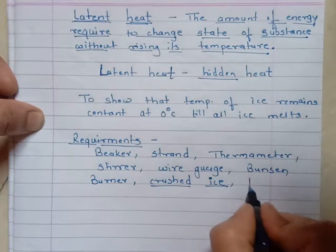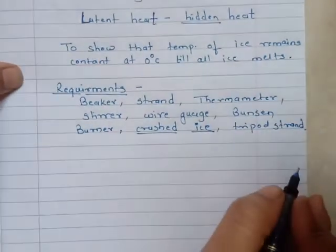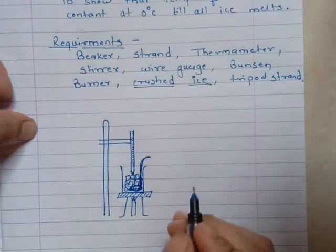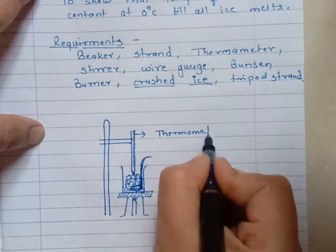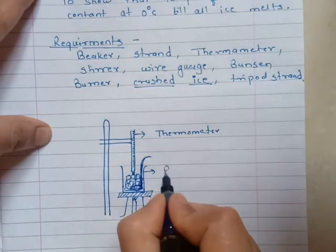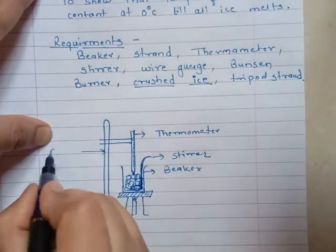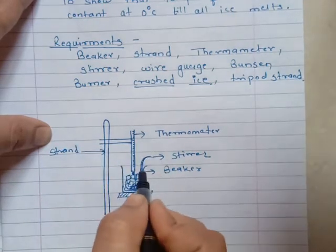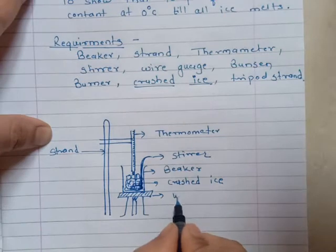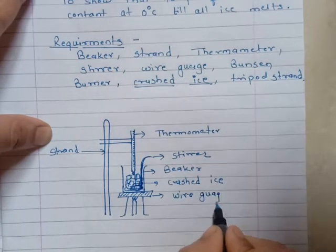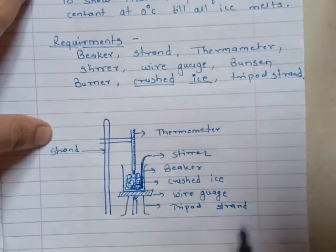Apart from crushed ice, you require a tripod stand. This is your experimental apparatus. This is the thermometer — a laboratory thermometer. This is the beaker, the stirrer, the stand to hold the thermometer. This is crushed ice. This is the wire gauge. This is the tripod stand, and this is the Bunsen burner.